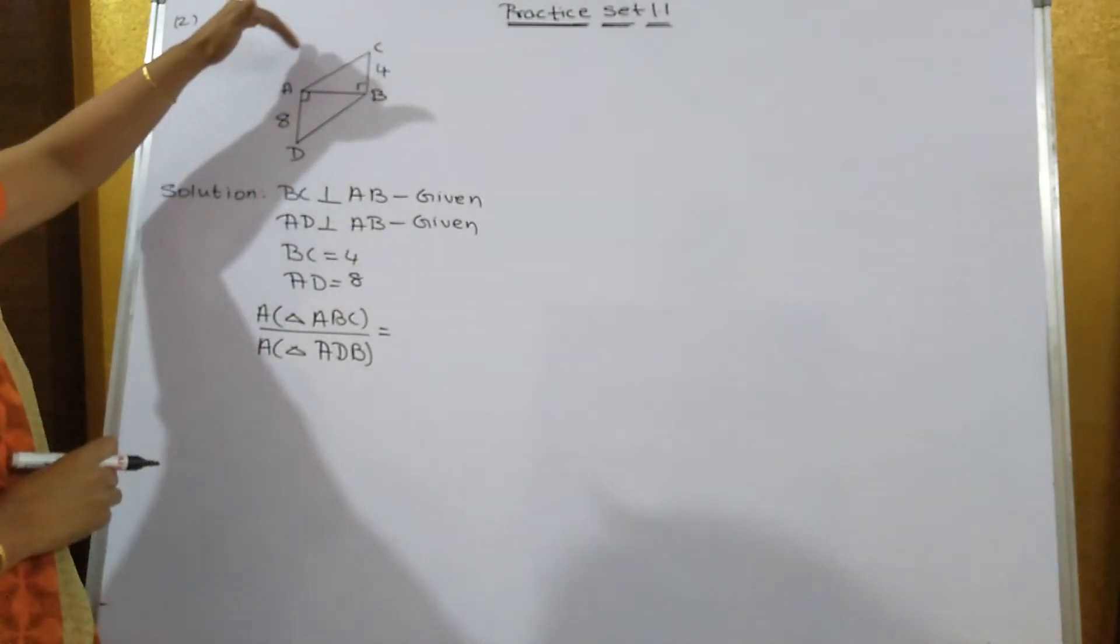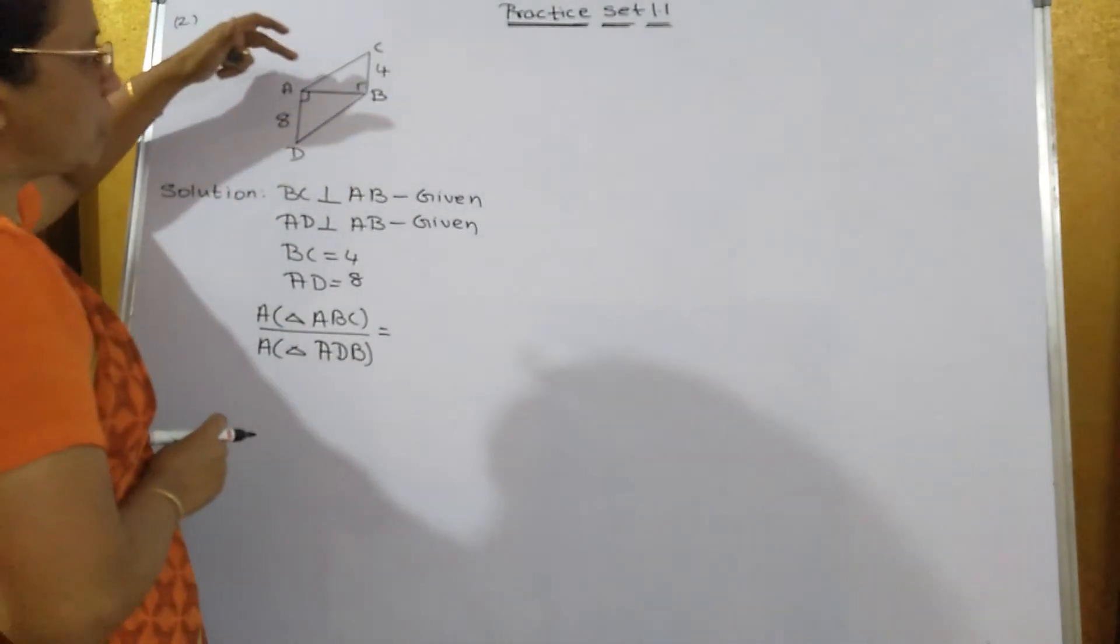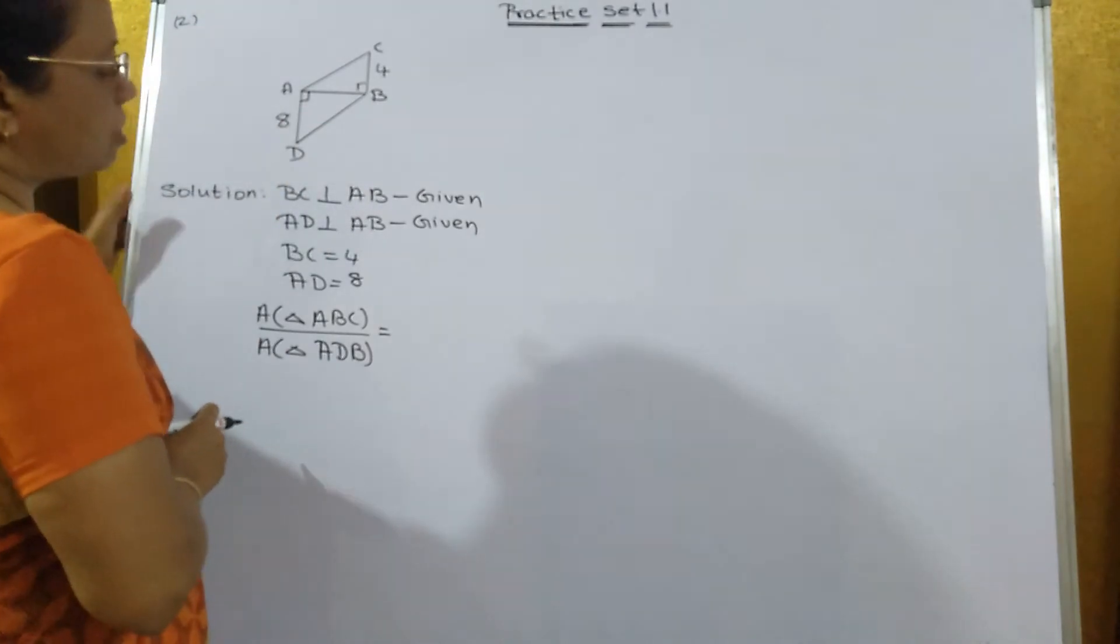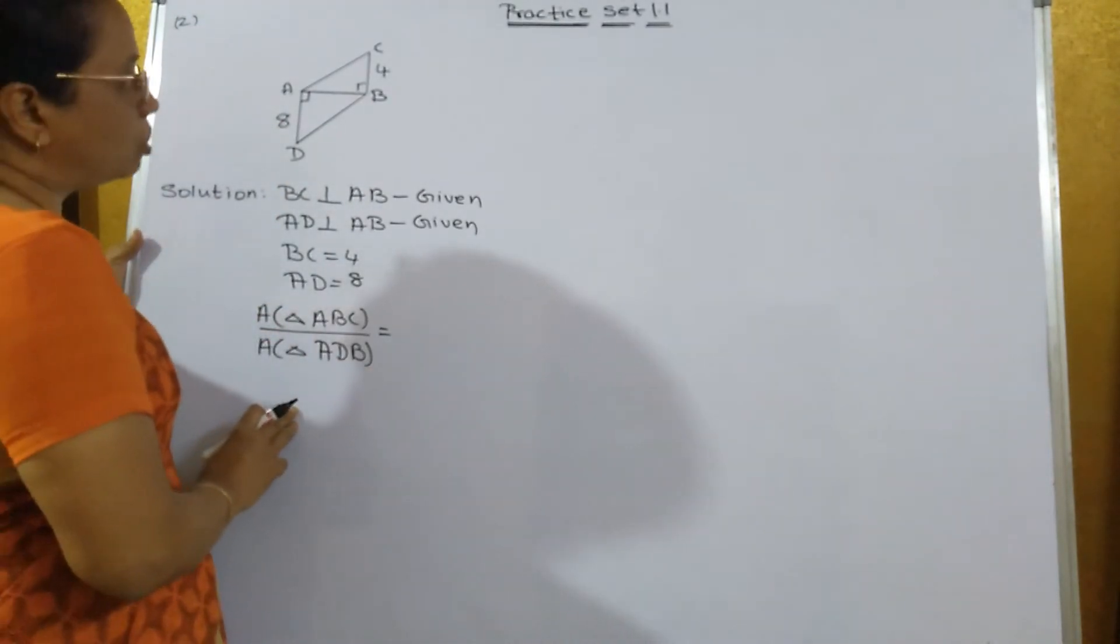ratio of the area of triangle ABC upon ADB. Now I just told you both are having the same base. So the ratio of the areas of the two triangles is equivalent to their heights.